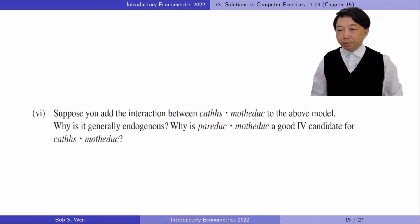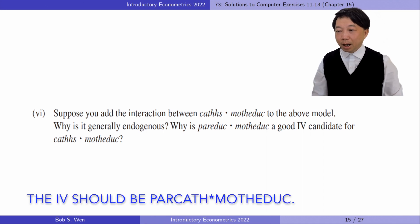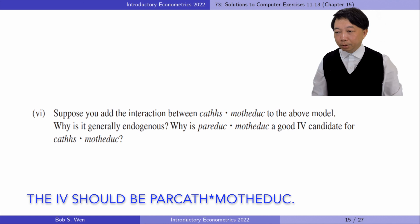In part 6, suppose you add the interaction between Catholic high school and mother's education to the above model. Why is it generally endogenous? Why is parent Catholic times mother's education a good IV candidate for Catholic high school times mother's education? Because Catholic high school is endogenous, the product of it and mother's education is also endogenous. The IV for Catholic high school is whether the parent is Catholic. Naturally, the IV for the interaction is parent Catholic times mother's education.